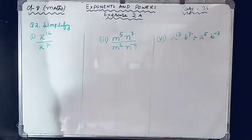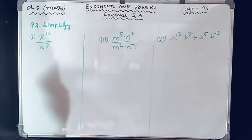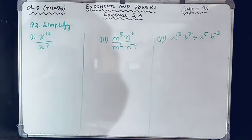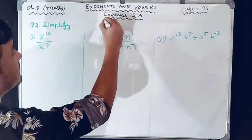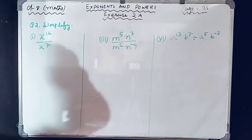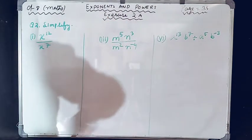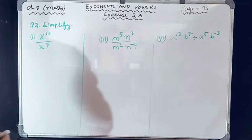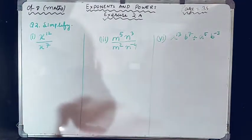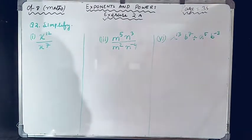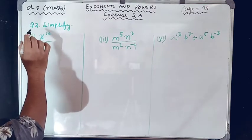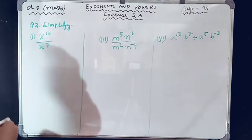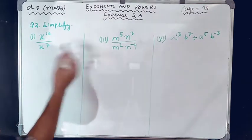Hello students, today we are solving question number two onwards of Exercise 2a, that is of Chapter 2: Exponents and Powers, which is at page number 35 of your book. Today we are solving question number two onwards, so your first question is question number two: simplify.